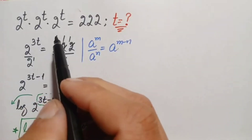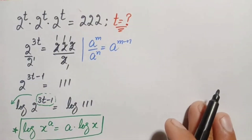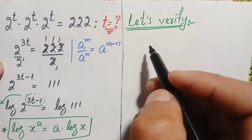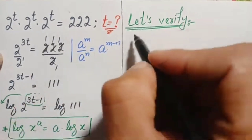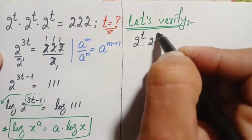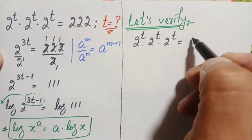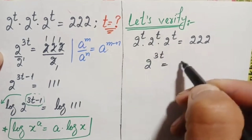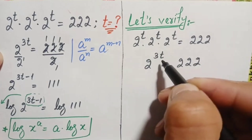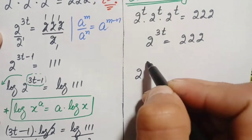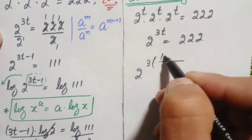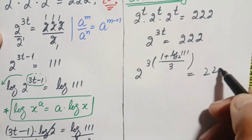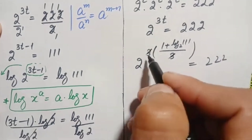So t equals (1 plus log of 111 with base 2) divided by 3 is our answer. Now we will verify this value. Writing the original problem: 2^t times 2^t times 2^t equals 222. Since the base is the same, we add the powers to get 2^(3t) equals 222. Substituting the value of t, this becomes 2 raised to the power 3 times (1 plus log₂(111)) divided by 3 equals 222. The 3s cancel.